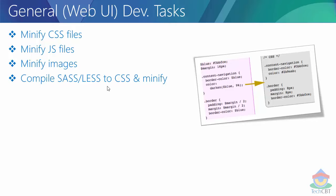A simple SASS file might look something like this with variables. Once the CSS file has been generated, those variables will be replaced with their respective values directly as CSS attributes. In that way we can have dynamic SASS or LESS based files for generating CSS. If you are not familiar with SASS or LESS, that is out of scope for this video and will be covered in upcoming videos.